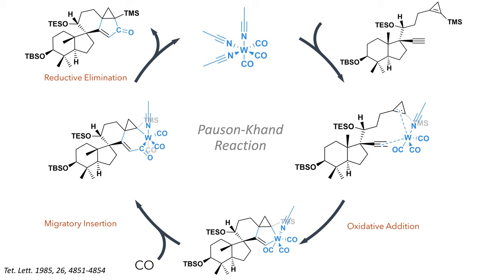Carbon monoxide was delivered using a balloon of the gas to provide the atmosphere necessary without excess pressure. The migratory insertion forms a new carbon-carbon bond between the carbon of the alkyne and the carbon monoxide ligand on the tungsten complex. Reductive elimination completes the sequence and produces the five-membered enone, together with regeneration of the tungsten catalyst.